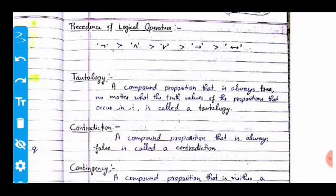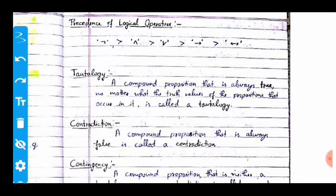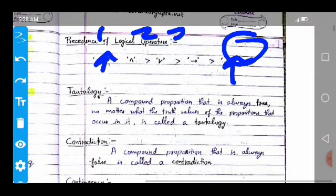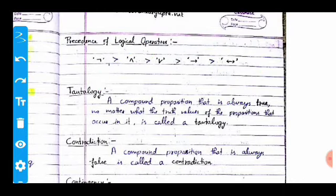Now we look at the precedence of logical operators. The lowest precedence is negation and the highest precedence is biconditional. The order from first to fifth precedence is: negation, conjunction, disjunction, conditional, and biconditional.